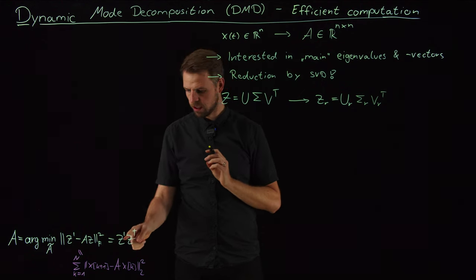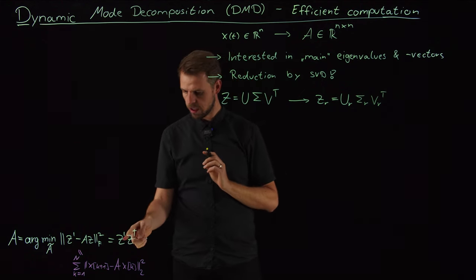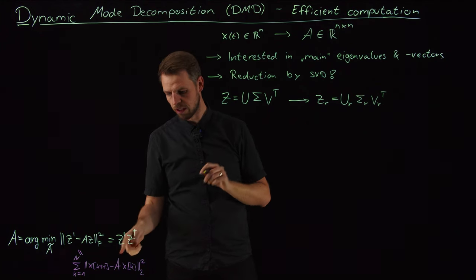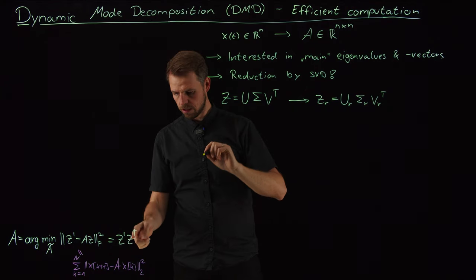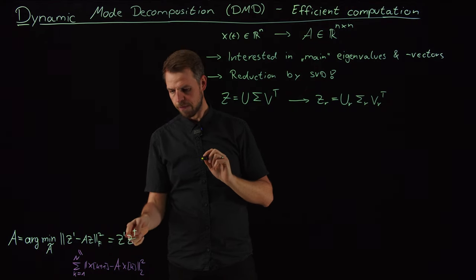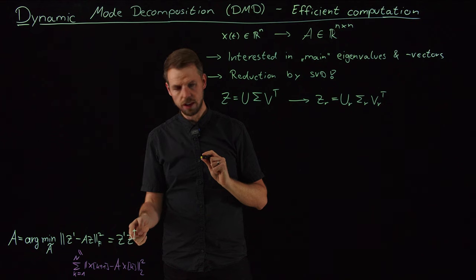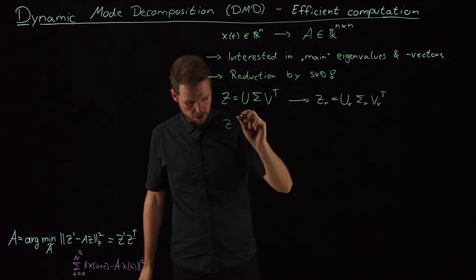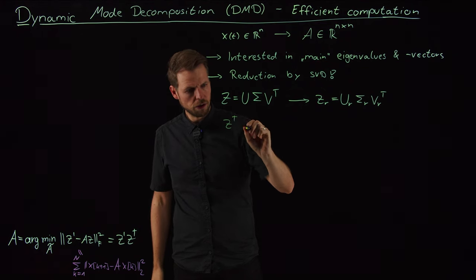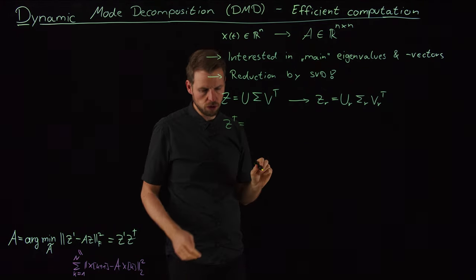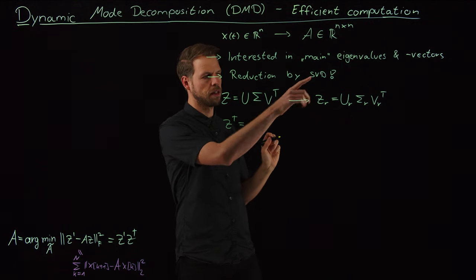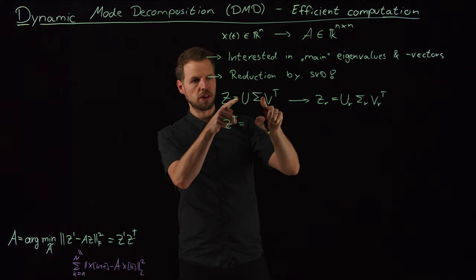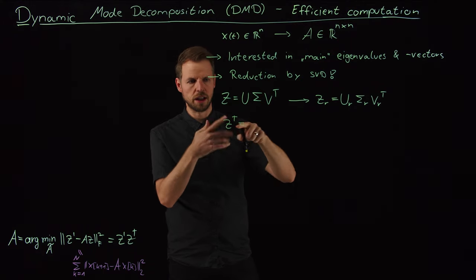What I need to do is use this reduced version in my DMD algorithm. First, I need to compute the pseudo-inverse of Z for this truncated version. So let's work through this together. I'll start with the standard definition of the pseudo-inverse and then insert the SVD truncation.